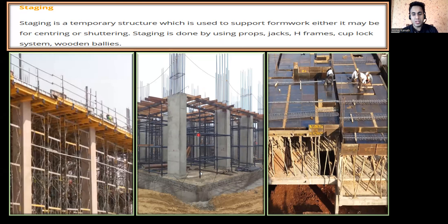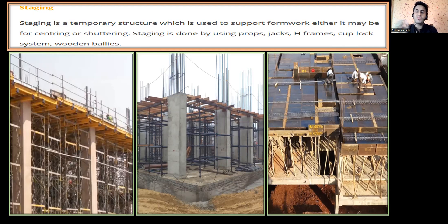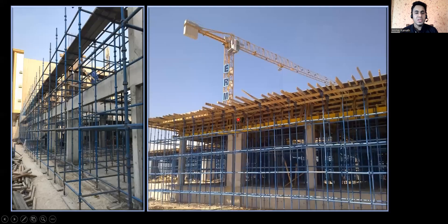Staging is done using props, jacks, edge frames — where something is arranged like a frame it becomes an edge frame — and also cup lock systems and wooden ballies. So this entire system what we have created is called staging. Simply put, staging is a temporary structure created to support the formwork. You can also add that staging can be done with wooden ballies, MS pipes, or edge frames. You can see the cup lock system here with the pipes arranged to support all the formwork.